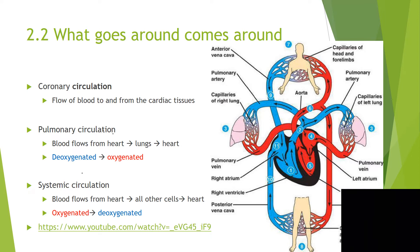Then we have the systemic circulation, starting at point 4, the left atrium. Blood flows from the left atrium to the left ventricle, then through the aorta and to the body cells. Here the body cells get oxygen and give away their carbon dioxide and other waste. Then at point 8, the vena cava brings the deoxygenated blood back to the right atrium at number 11.